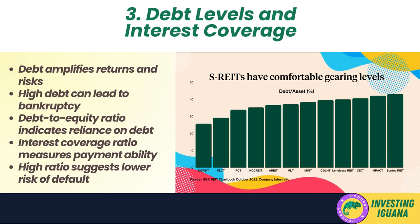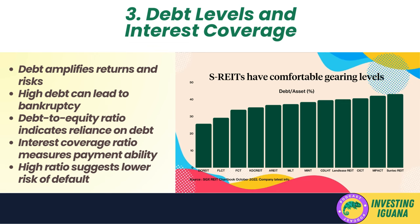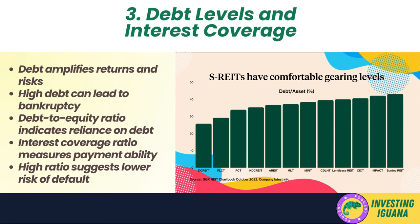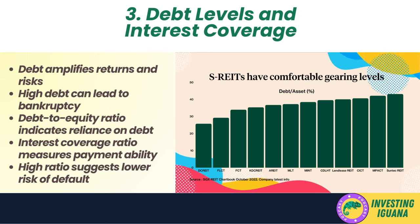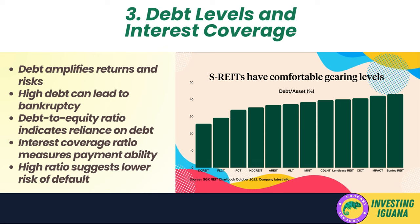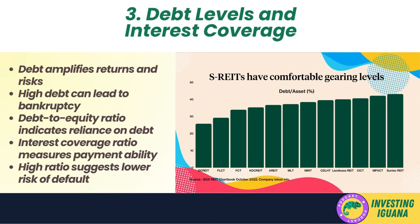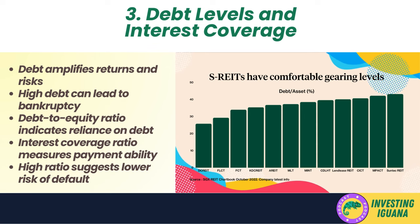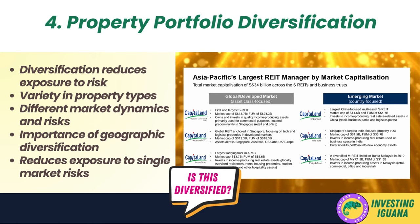To assess a REIT's financial health and ability to manage debt, investors look at two key metrics. The debt-to-equity ratio compares total debt to total equity — a high ratio can indicate heavy reliance on borrowed money, which can be a red flag if earnings are insufficient to cover debt payments. The interest coverage ratio measures a company's ability to meet interest payments; it's calculated by dividing earnings before interest and taxes (EBIT) by interest expenses. A high interest coverage ratio indicates the REIT generates enough earnings to comfortably cover interest payments, suggesting a lower risk of default.